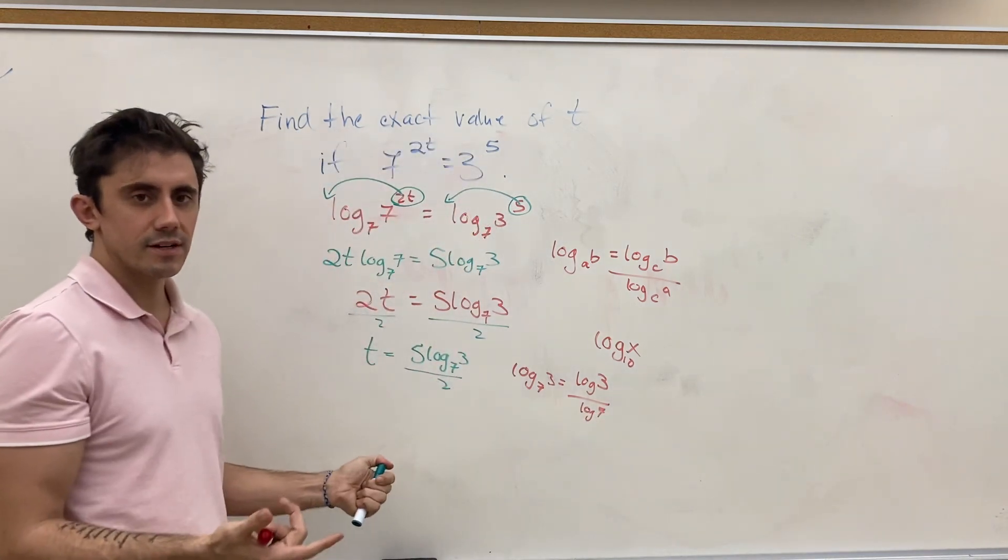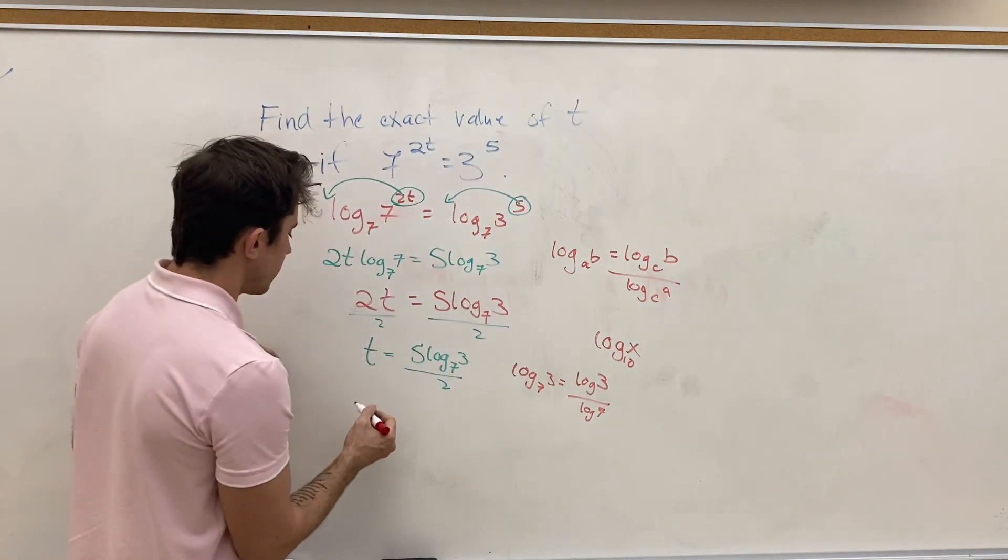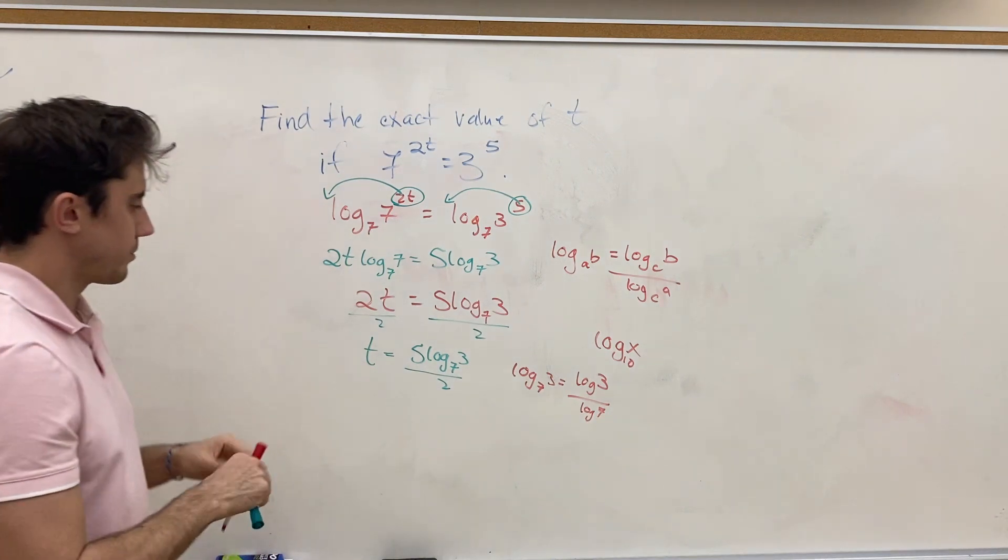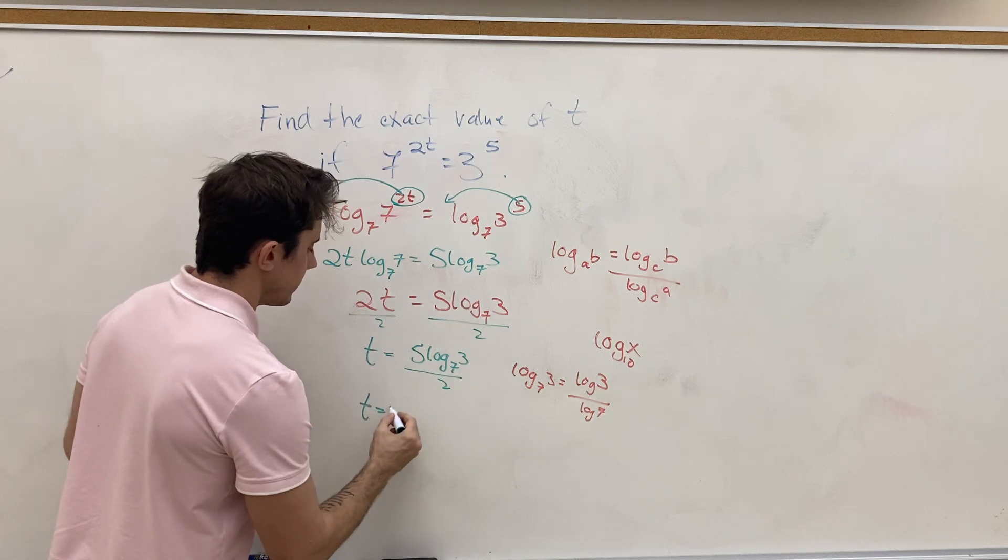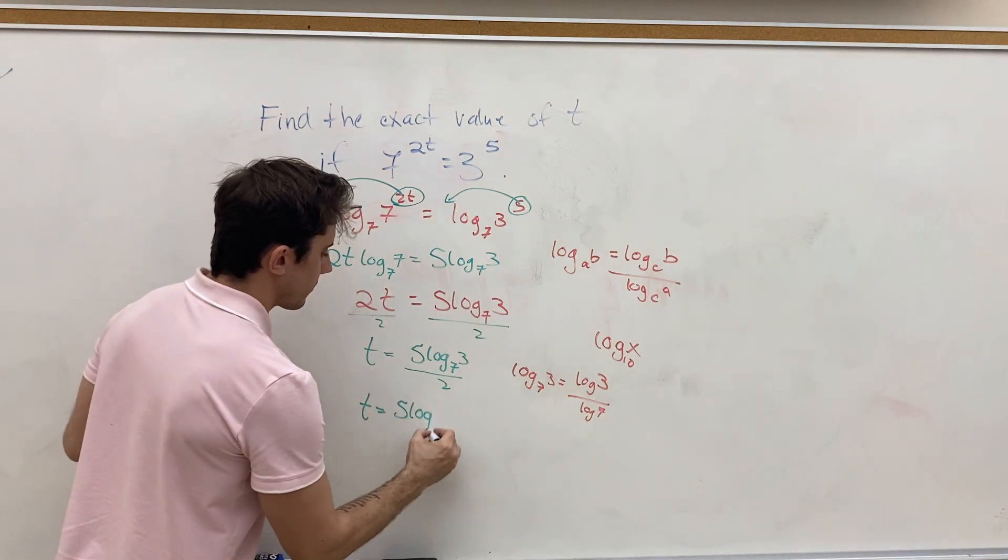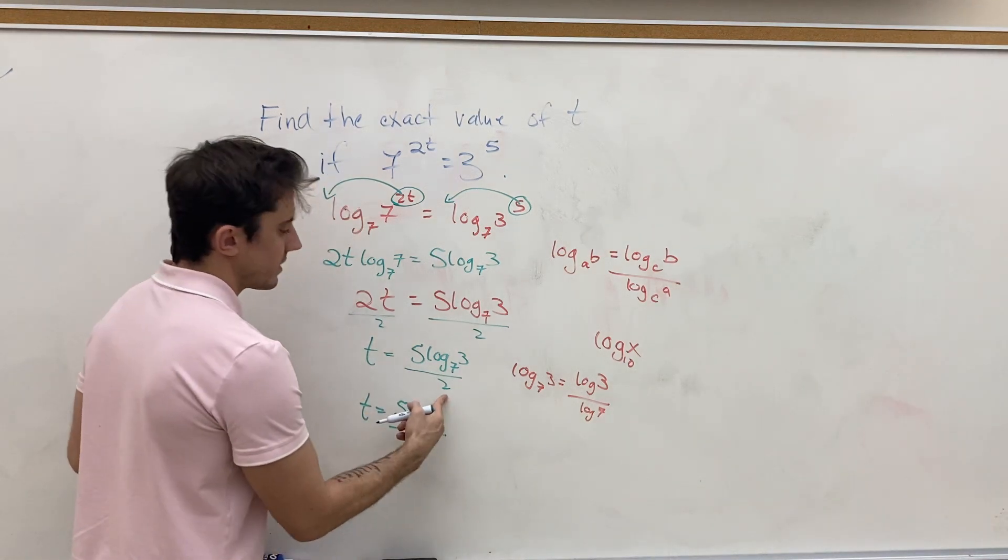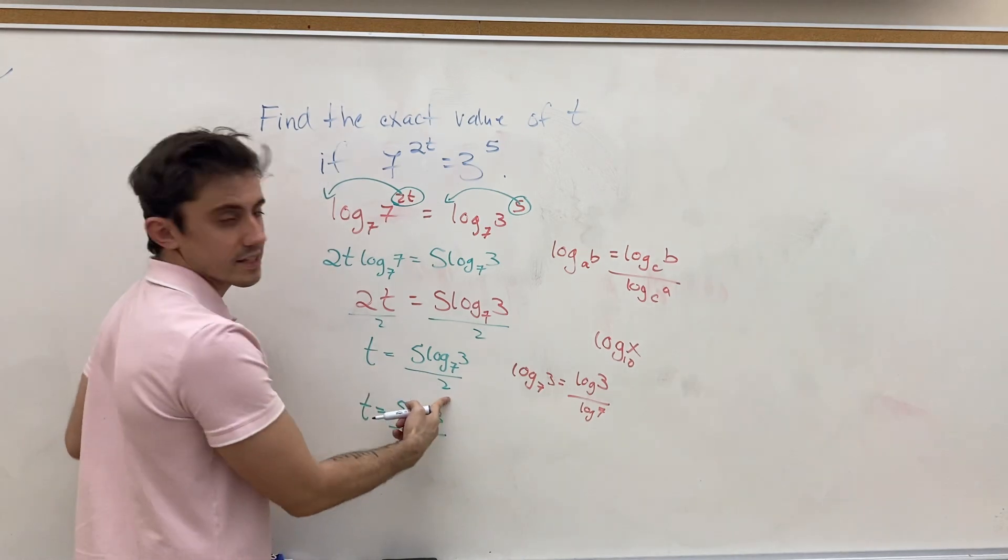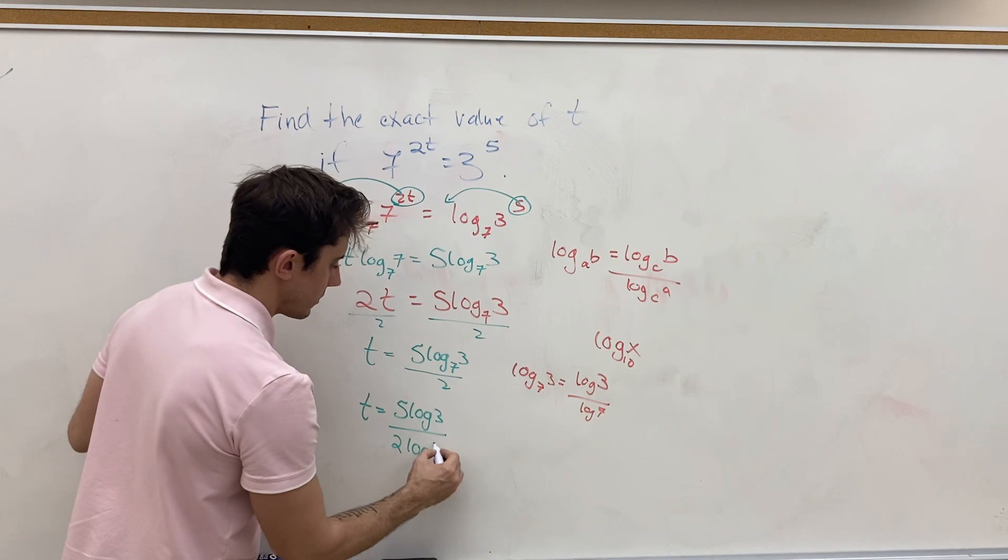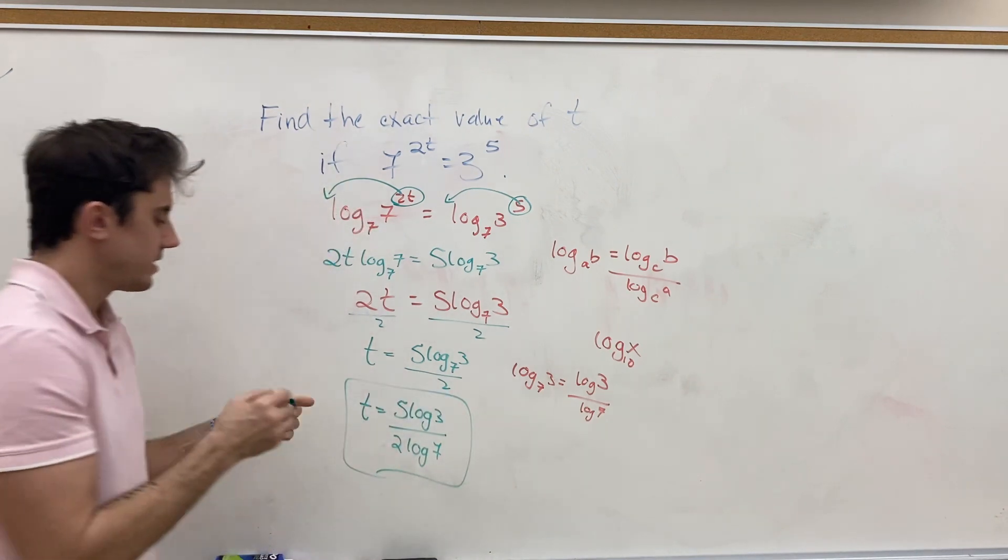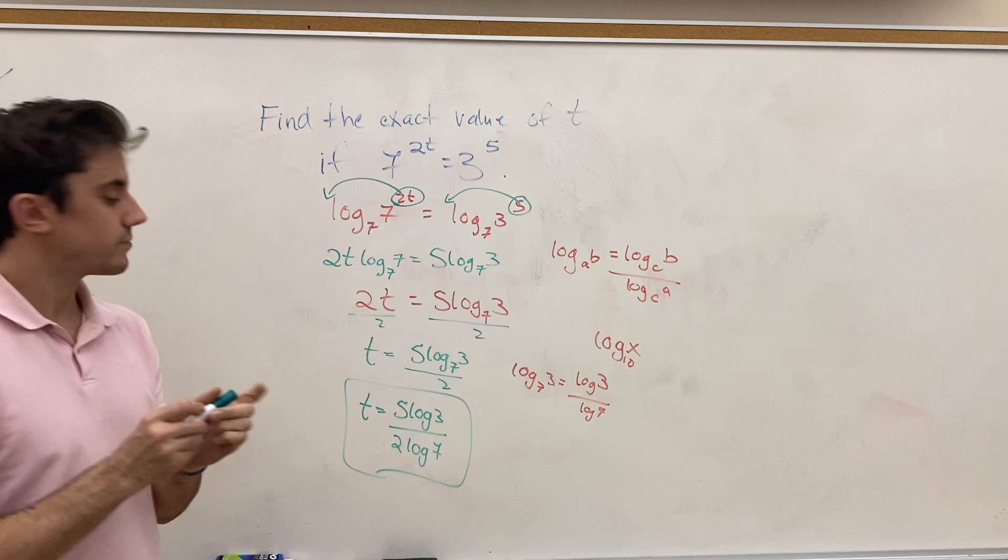And that means that we can write our simplified version of t, as t equals 5 log of 3 over, we can combine the log 7 in the denominator with 2, so over 2 log 7. And this would be our simplified value of t.